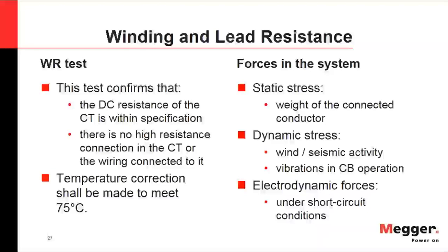Winding resistance testing is performed because the CT is subject to various stresses: static stress from the weight of connected conductors, dynamic stress from wind, seismic activity, vibrations, circuit breaker operation, and electrodynamic forces under short circuit conditions. To calculate the ratio correction for a class C CT, we must consider the internal resistance and external impedance including secondary lead resistance.